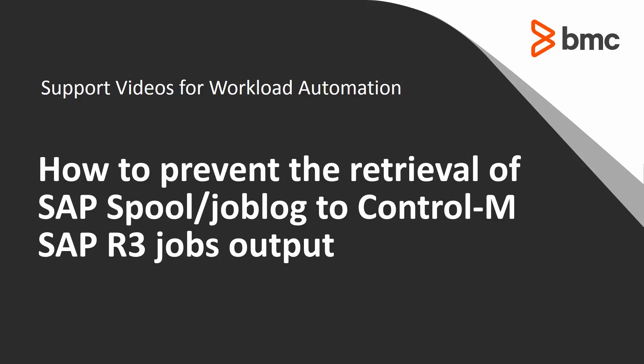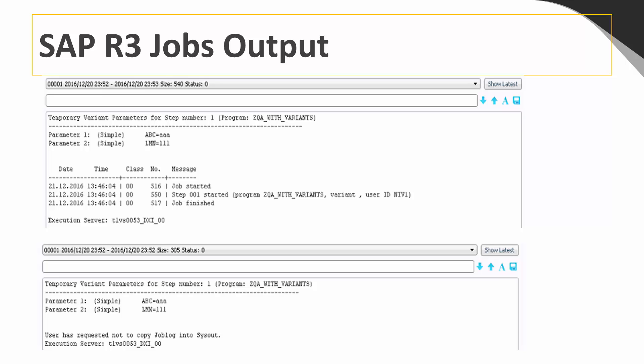In this video, we will show you how to add, or avoid adding, the spool or job log of an SAP type R3 job to the job output. When running SAP R3 jobs from R3 or from Control-M, we can control the content of the job output based on our needs.